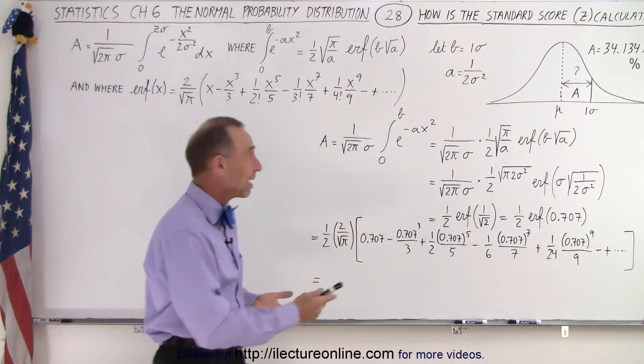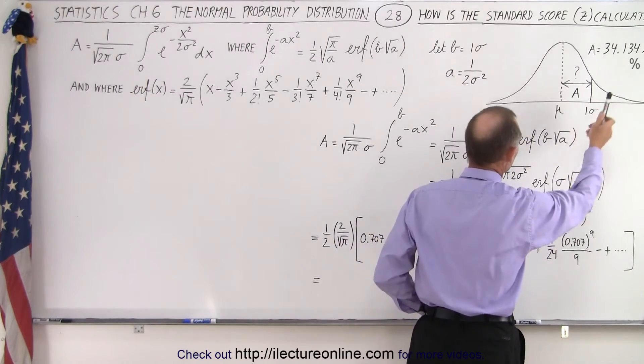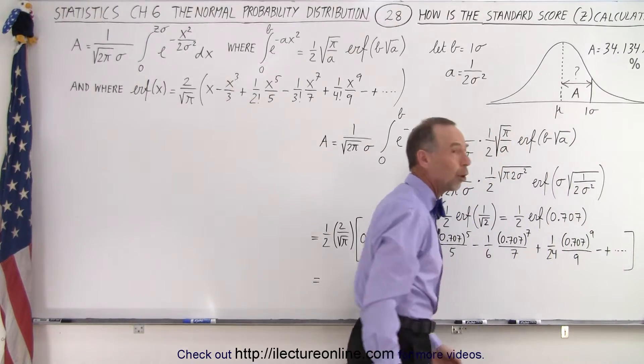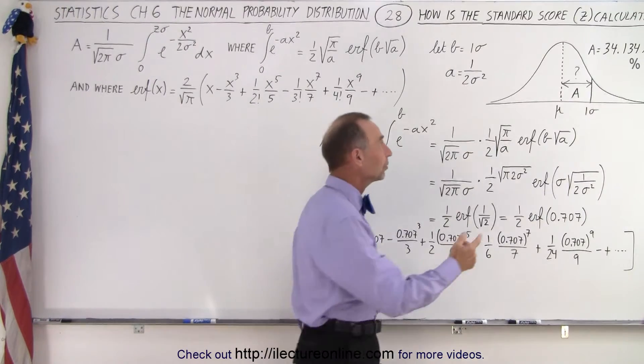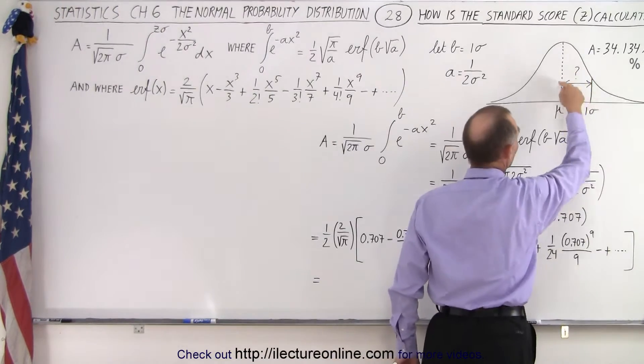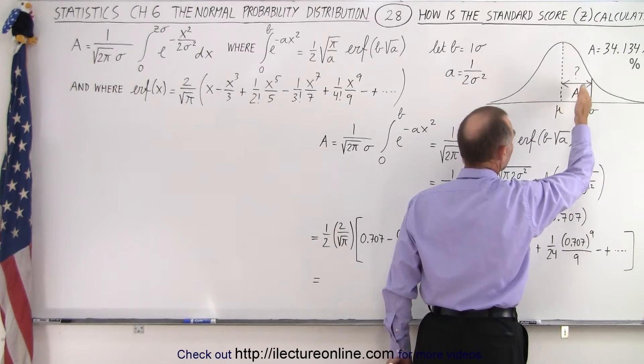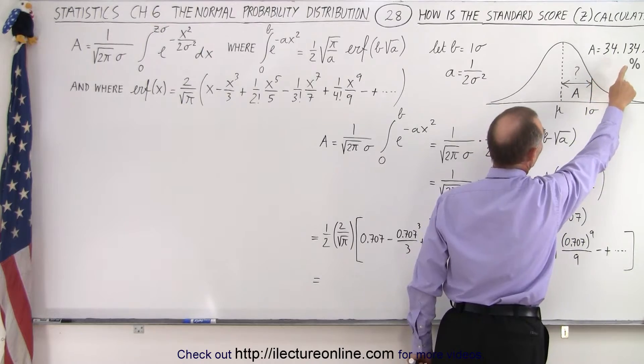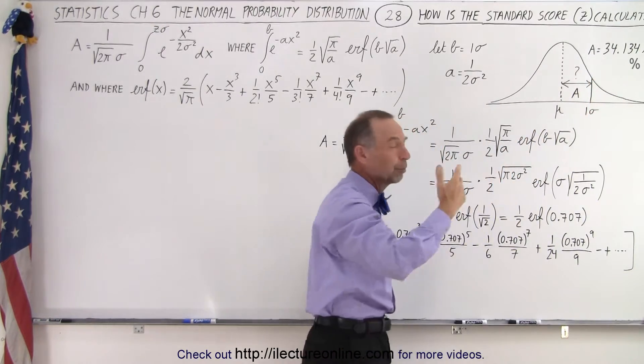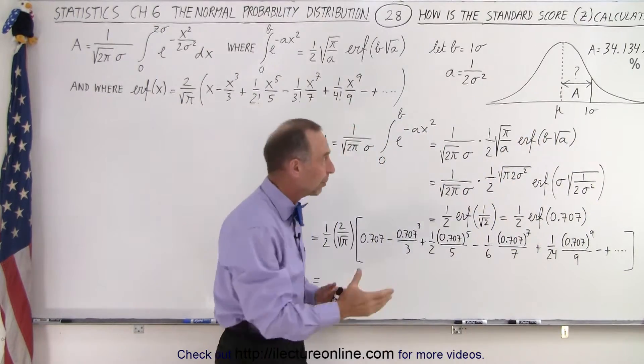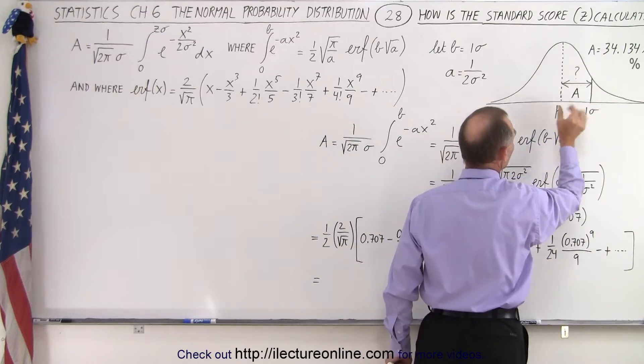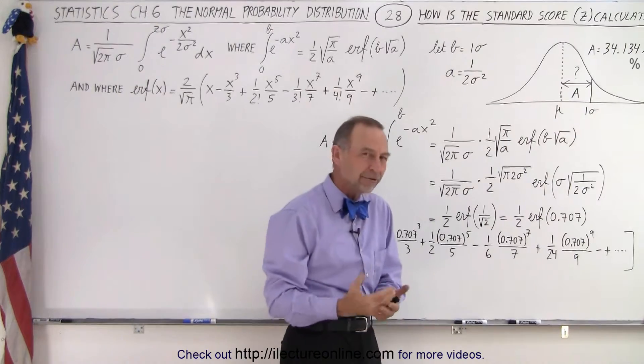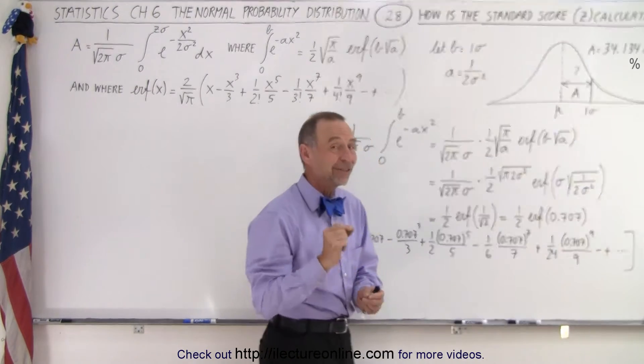So again, let's say we have a normal distribution, we have a mean, and we have some point away from the mean, let's say one sigma away from the mean, and we want to calculate the area underneath the curve. And of course if you look that up on the z table, one sigma will give you 0.34134, which is 34.134 percent. That represents the area underneath the curve for this region. But how did they get that number, where did that come from? Well, this is how it's done.